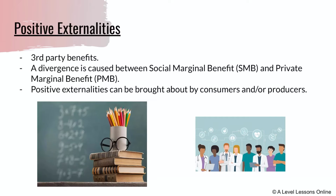In this video we're looking at positive externalities, which involve third-party benefits. It is the impact that consumption or production of a good or service has on an external party — in this case a benefit. This positive externality causes a divergence between your marginal social benefit (MSB) and your marginal private benefit (MPB). Stick to one notation, be it MSB or SMB.